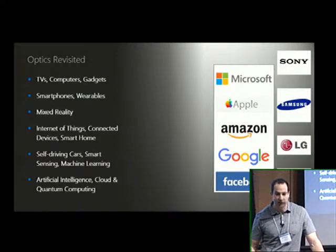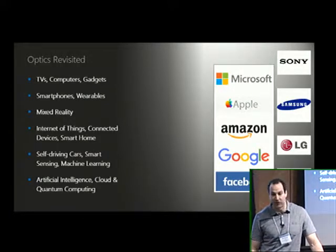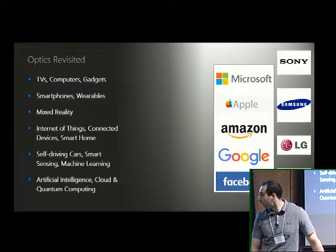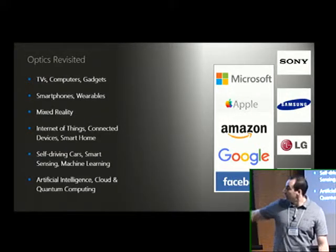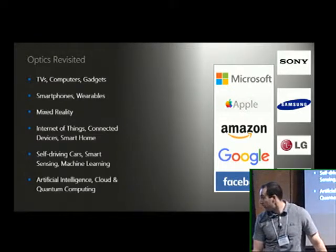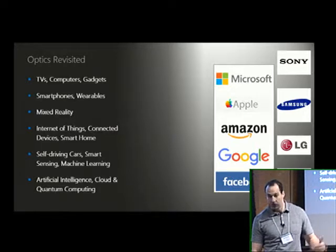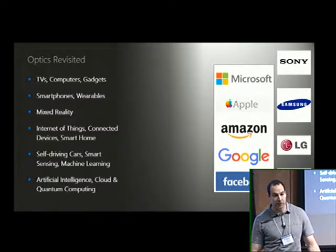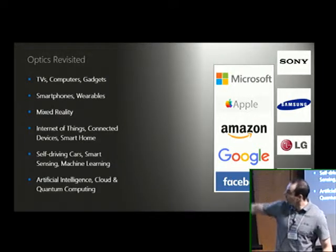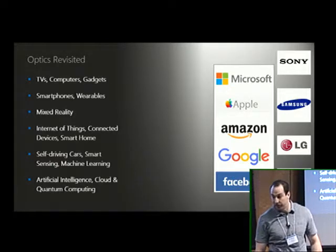You start looking at future tech - smart sensing is becoming big, machine learning. Optics is required for all of this. Self-driving cars is a big thing, all the companies are working on it. Why is Apple and Microsoft interested in self-driving cars? Then artificial intelligence, cloud and quantum computing - everybody's working on this. Microsoft's GM of optics when I started now heads the quantum computing division.